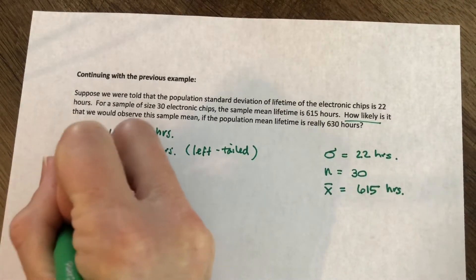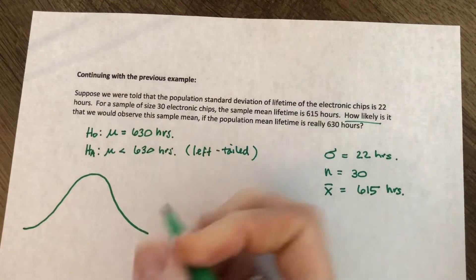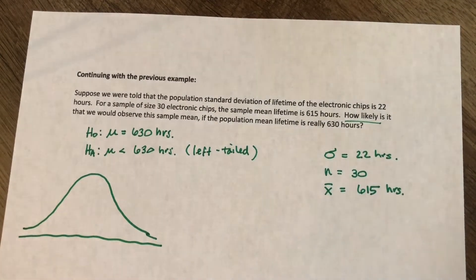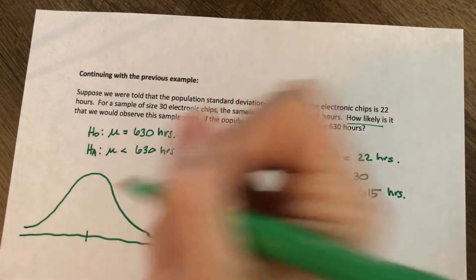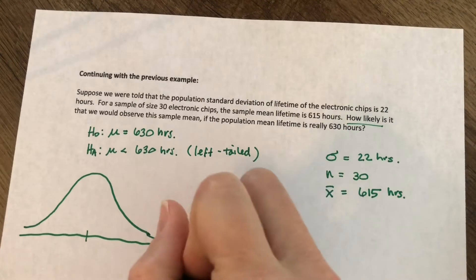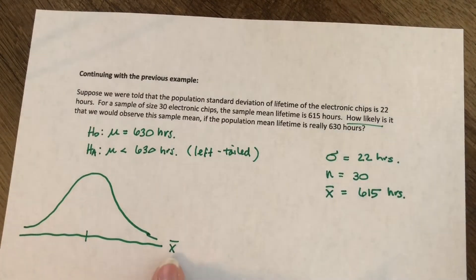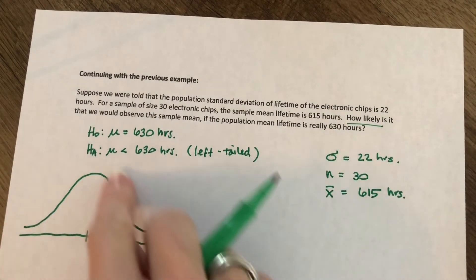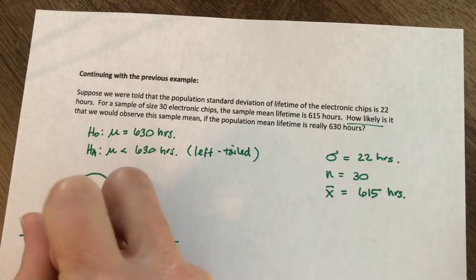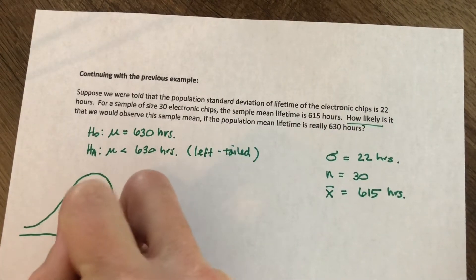We are going back to chapter 6 information here to try and figure this question out. Essentially what we're saying is if we assume that the null hypothesis is true, that means that this distribution of x bar, so all the possible sample means x bar, would be right at the population mean, which is 630. So our null hypothesis here is that the mean is 630.